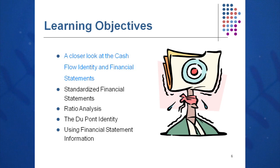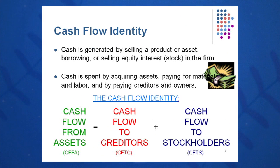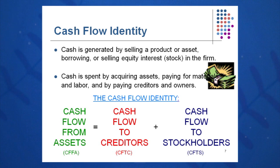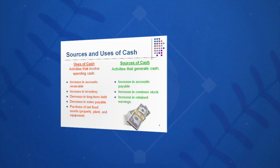Learning objective one: let's look at the cash flow identity. Remember from Session 2 that cash flow in equals cash flow out. Cash flow from assets equals cash flow to creditors plus cash flow to stockholders. Basically, that's what a company does — it spends cash and it produces cash. If it doesn't have cash, it quickly becomes a failure. So we acquire assets, pay our bills, pay creditors, pay owners, and this is a use of cash. Hopefully we have higher sources of cash, which allows us to do all of that successfully.